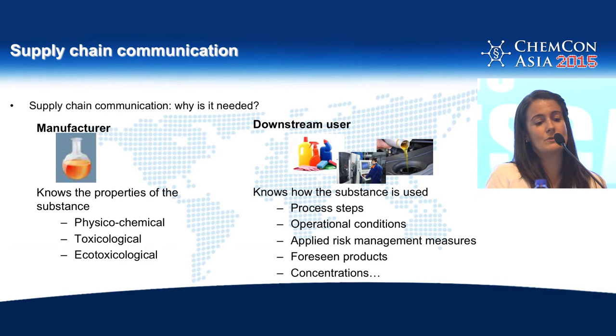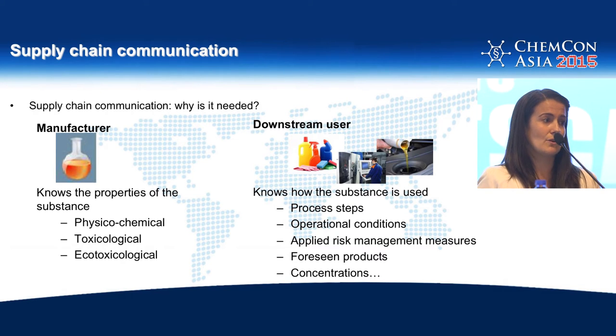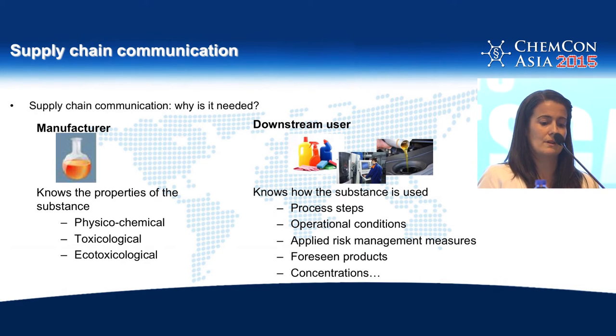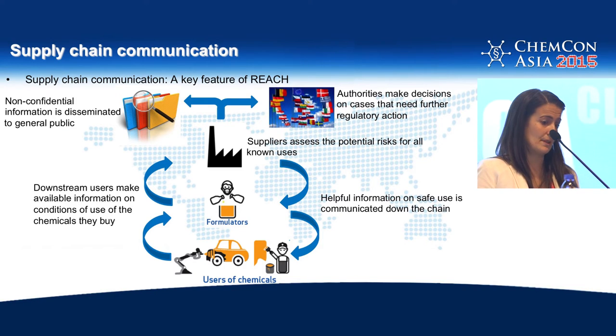This is the knowledge that the downstream users have. So supply chain communication is there to bridge the gap, so that manufacturers get information on how substances are used. But also, the users of the chemicals get information on how the substances can be used safely after the assessment has been performed, so that we don't have theoretical uses in the registration dossier. We need to find ways to make this information available upstream, so that the assessment can be done on real conditions of use. This is the flow of information that should go up the supply chain.